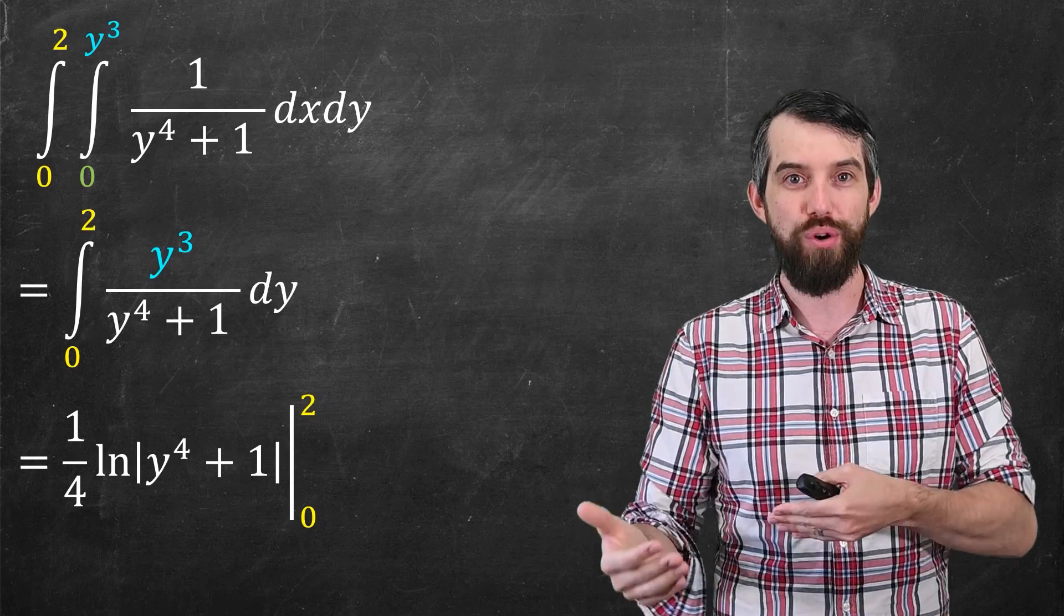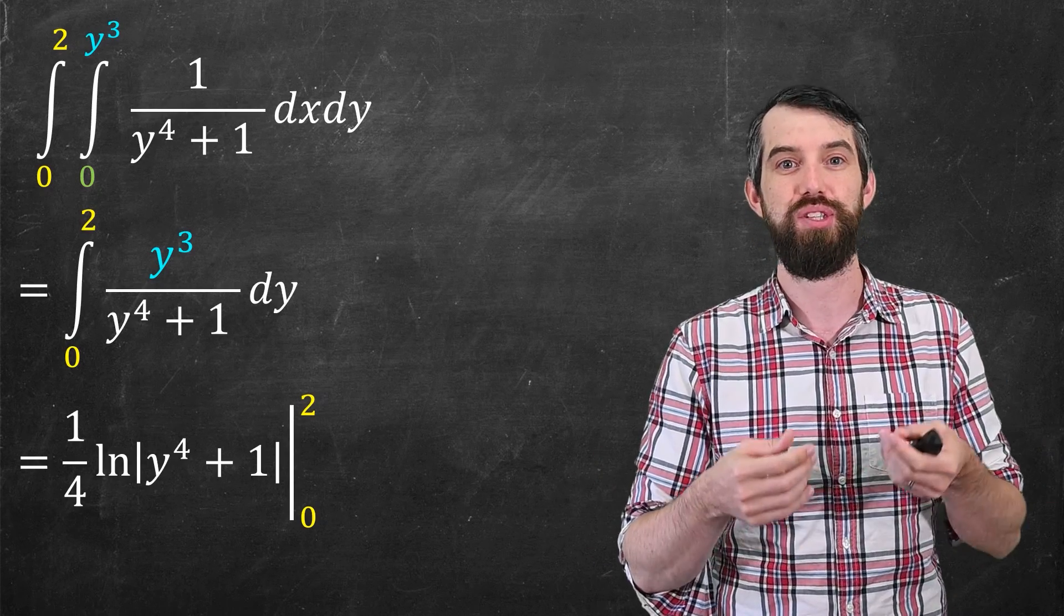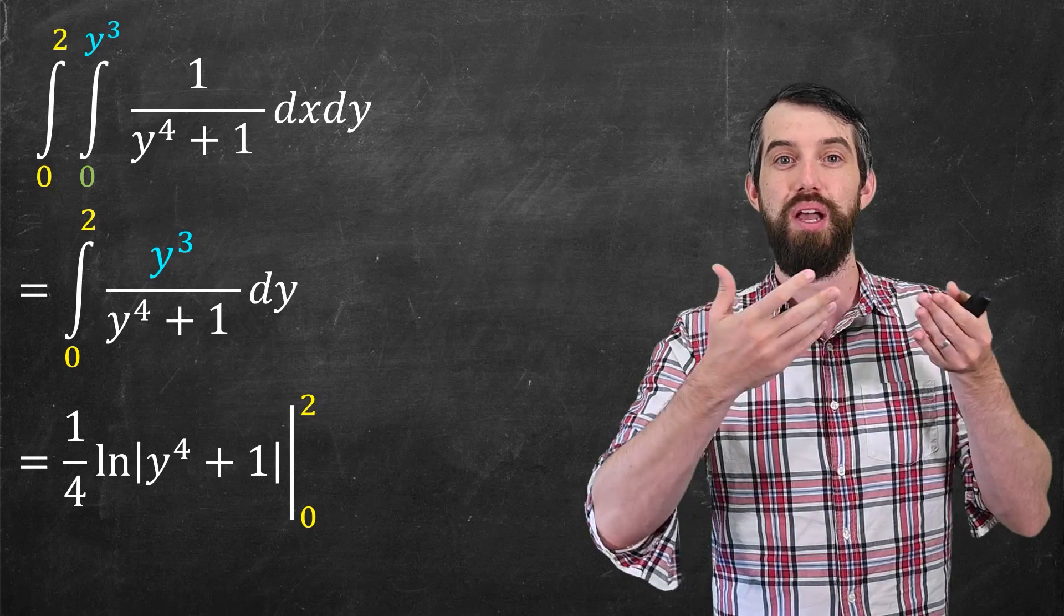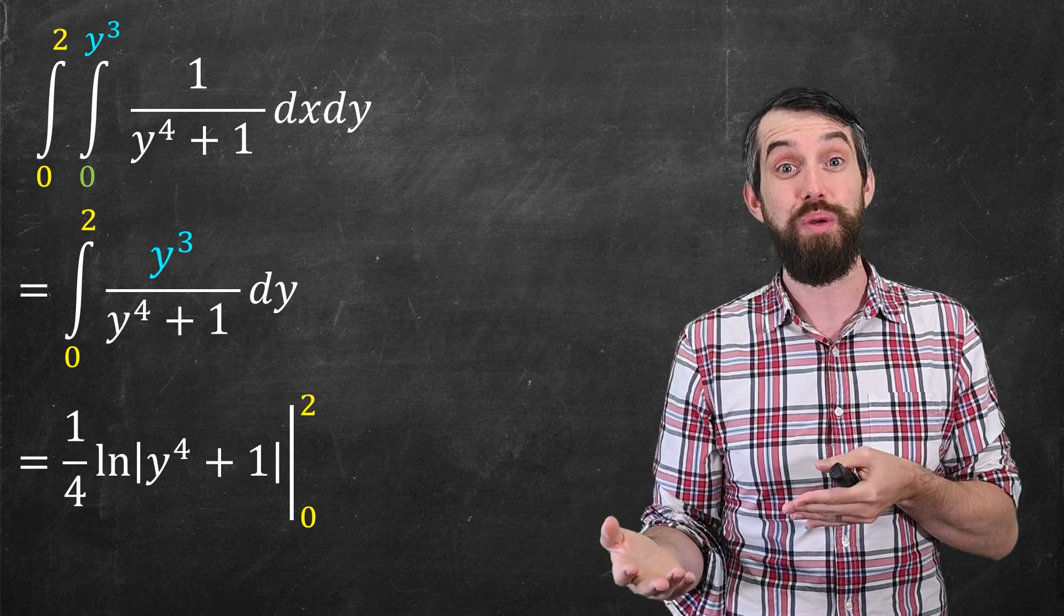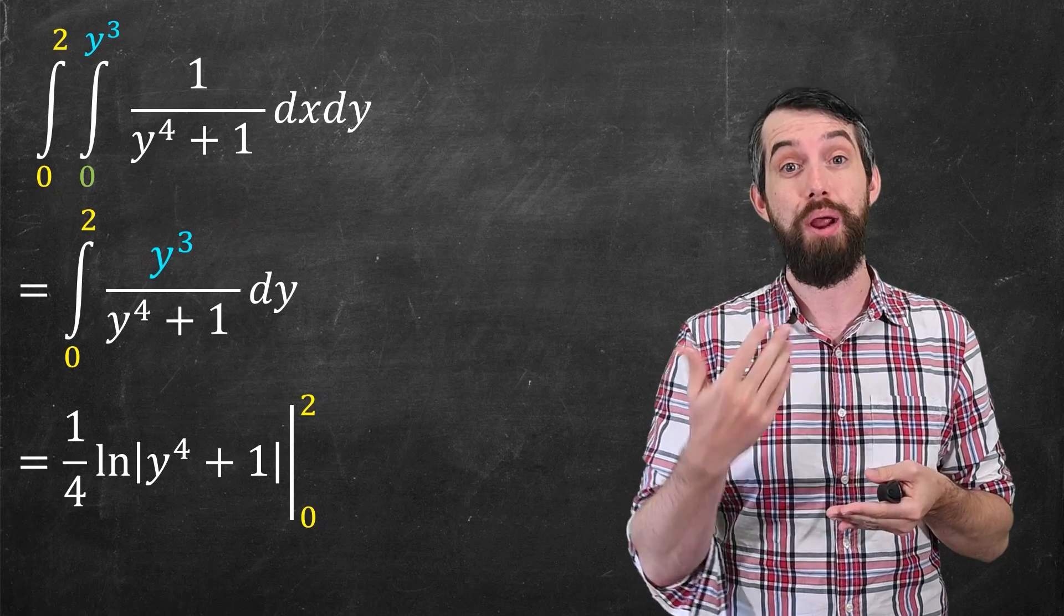So what do I get? This is just going to be one quarter of the logarithm of the denominator. So in other words, one quarter of the logarithm of y to the fourth plus one. I'm evaluating it between the endpoints of y equal to zero and y equal to two. When you plug in those numbers, you just get the logarithm of 17 divided by four.